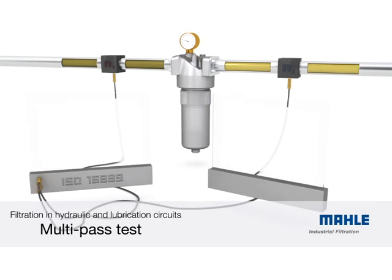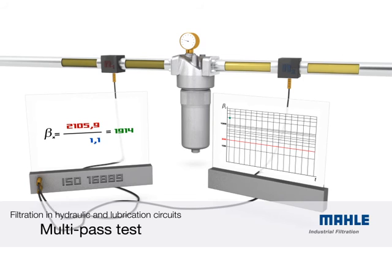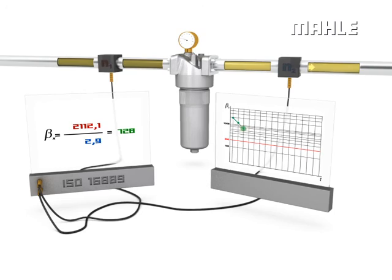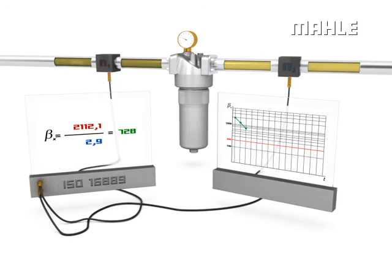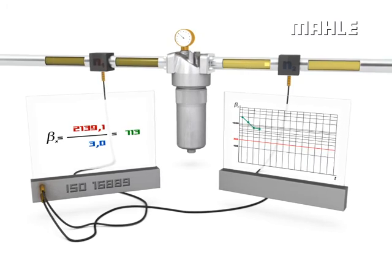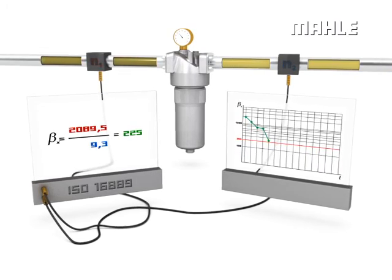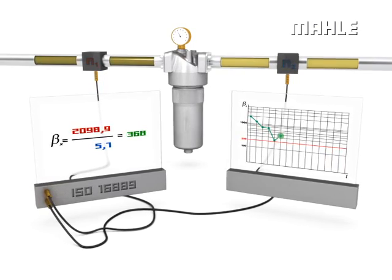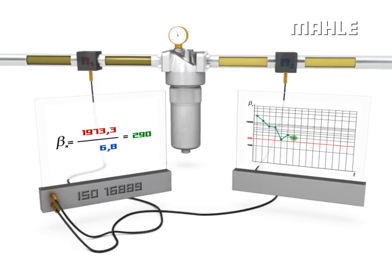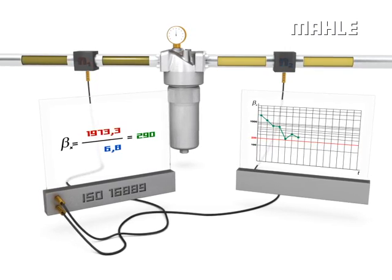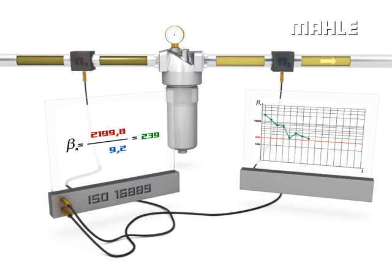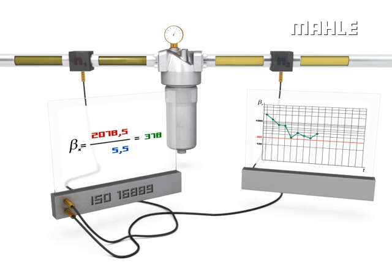The ISO 16889 multi-pass test determines the filtration performance of a filter element and its apparent dirt holding capacity in a closed circuit. The testing liquid is contaminated according to definitions before the test filtration. As the filter separates the test dust, the differential pressure increases across the filter element. Throughout the test, particle counts are taken both upstream and downstream of the filter element, and a beta ratio is calculated based on these values.